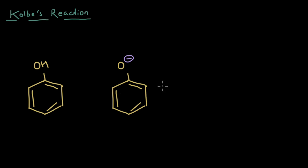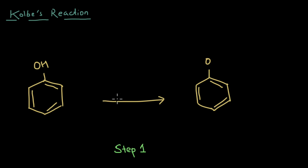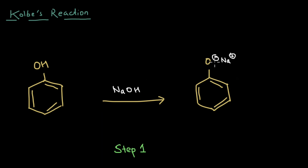Effectively, the phenoxide anion is more reactive — or more ortho/para directing — because this negative charge is easily transferred to the ortho and para positions. With this information, you can probably guess what the first step of the reaction is. The first step is reaction with NaOH: because we want a phenoxide ion, this base takes off the hydrogen, giving us a negative charge on oxygen and a Na+ counterion. At the end of step one, we have the phenoxide ion, which is more reactive and ready to attack in the next step.